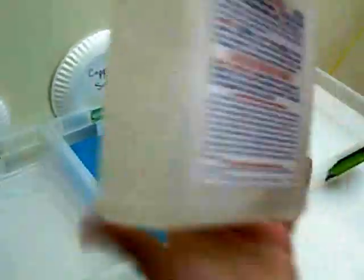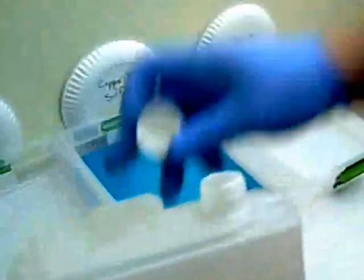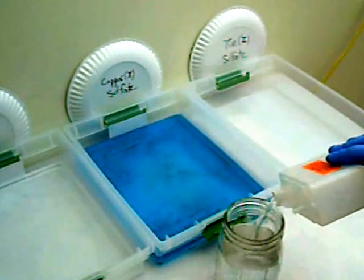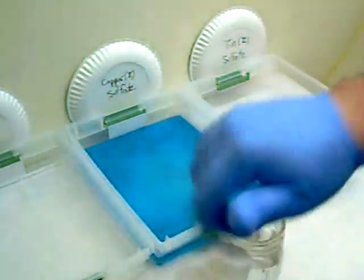Now I'm going to make the tin-2 sulfate solution. It's the exact same process as the copper solution. Four parts water to one part sulfuric acid. I use warm water.